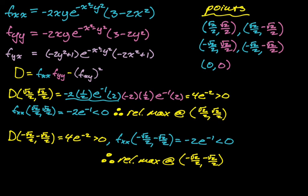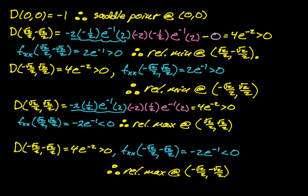To summarize: we went through all five critical points. We had one saddle point at (0,0), two relative minimums at (√2/2, −√2/2) and (−√2/2, √2/2), and two relative maximums at (√2/2, √2/2) and (−√2/2, −√2/2). The exponential e^(−x²−y²) is never zero, so despite looking scary, it didn't really impact finding the critical points. Hopefully this was helpful and good luck.